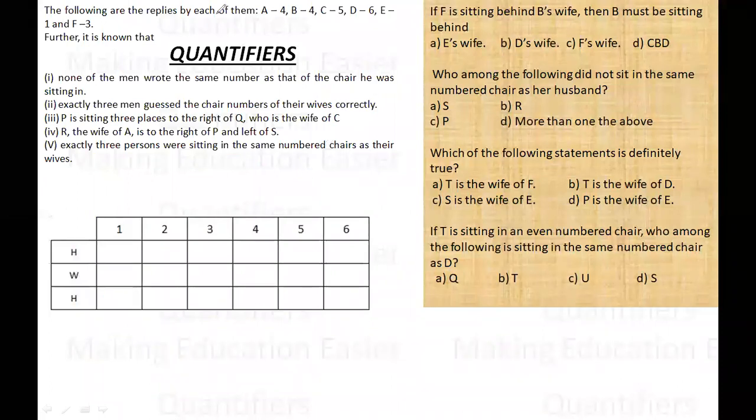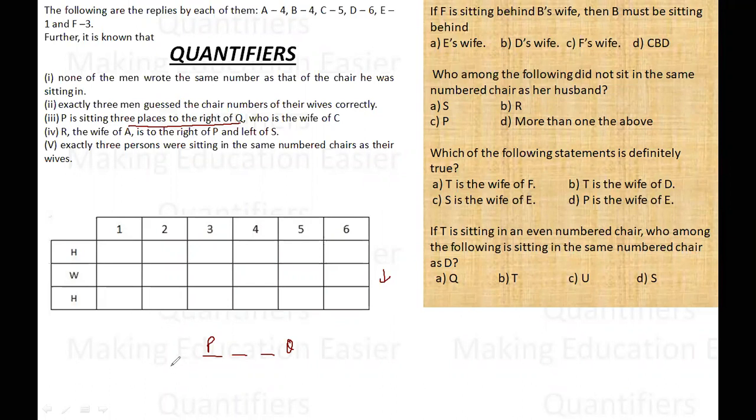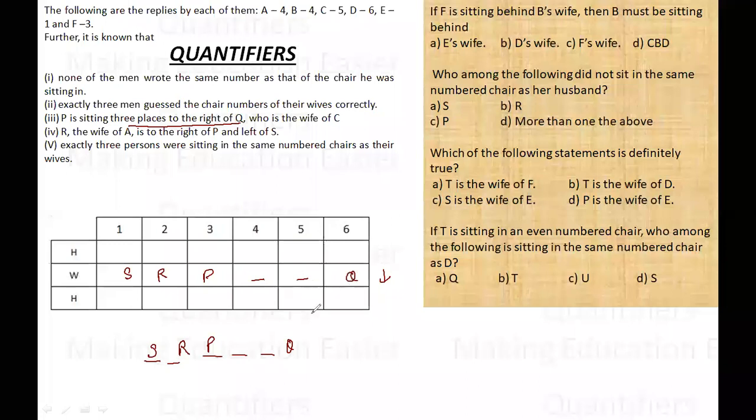These are the guesses made by them. It was known that there are some conditions. Let's try to make the arrangement first. P is sitting three places to the right of Q. So since they are watching south, Q and three places left, first place left, second place left, so this is P. Fair enough. Then R is the wife of A, R is the wife of A who is to the right of P.